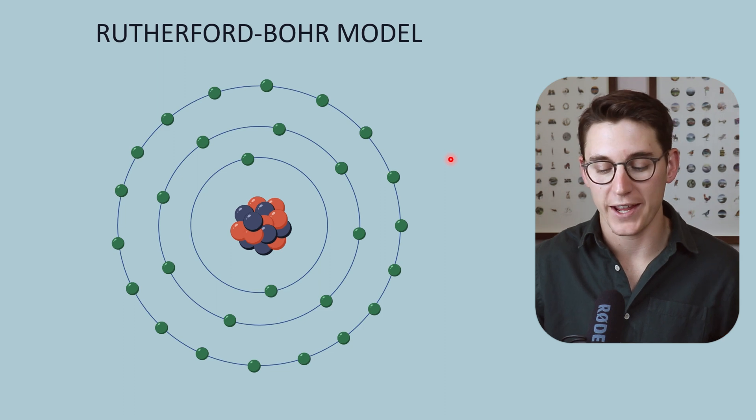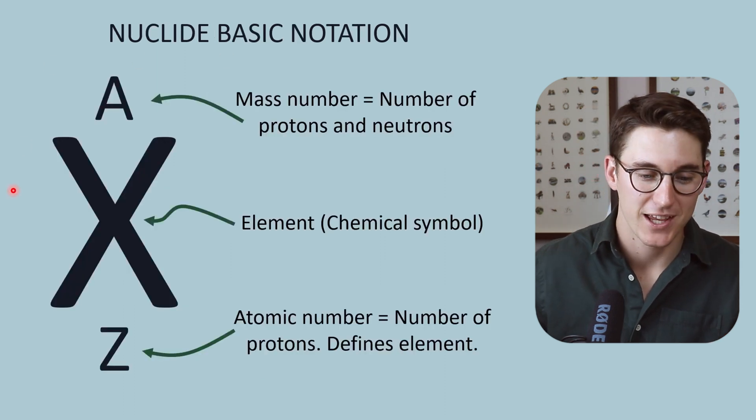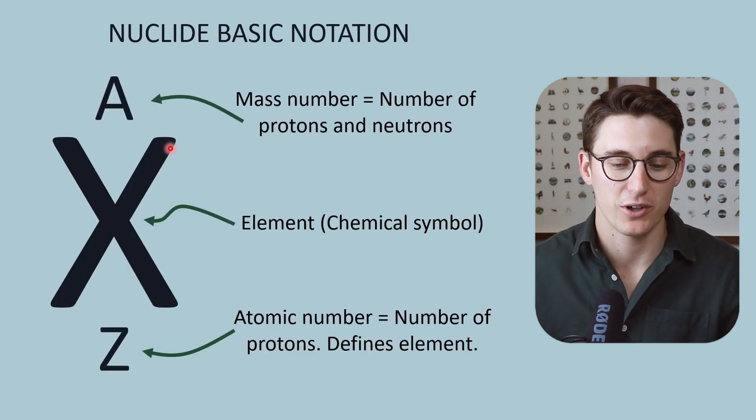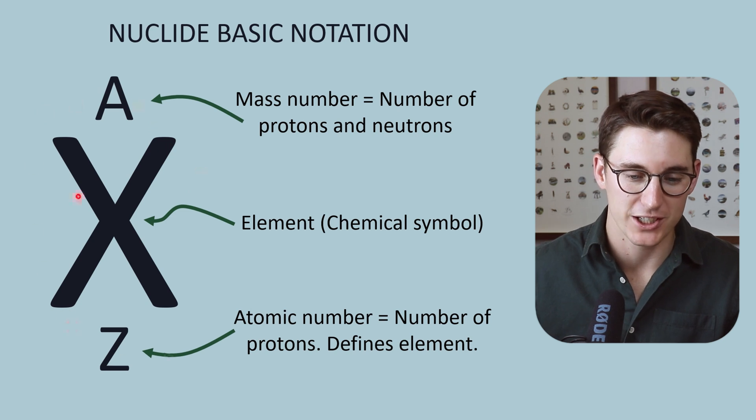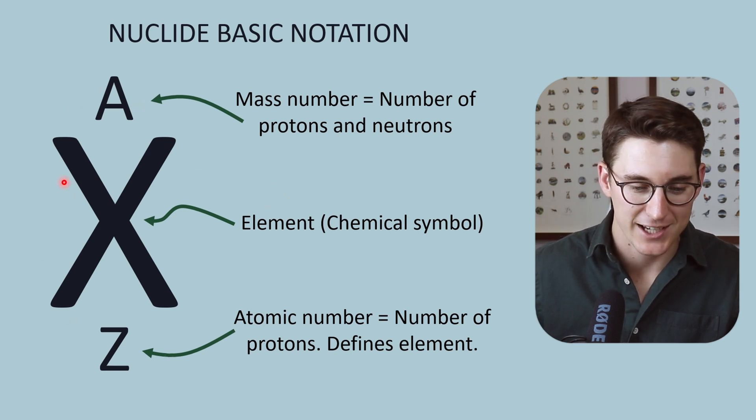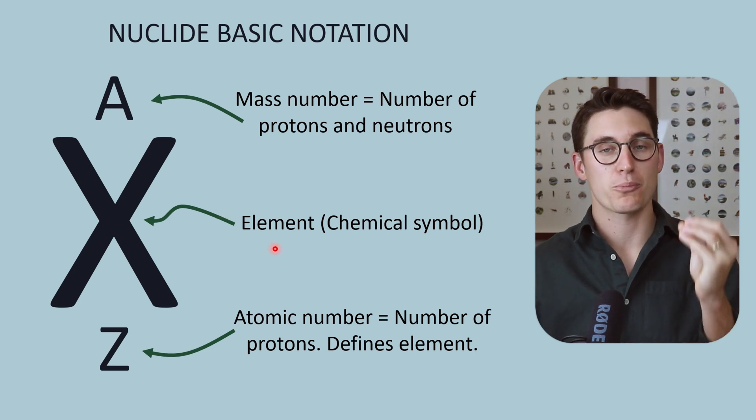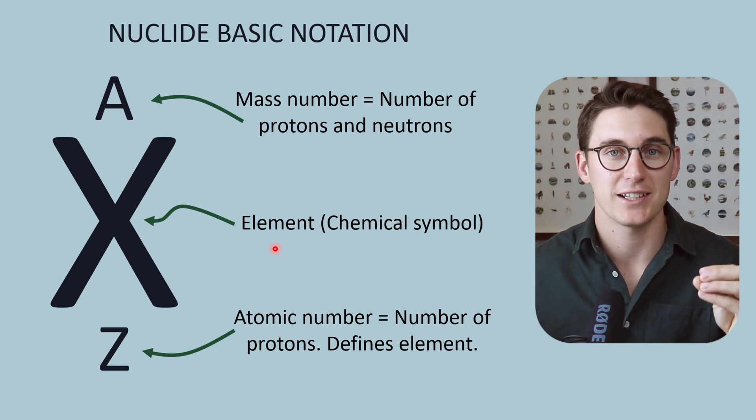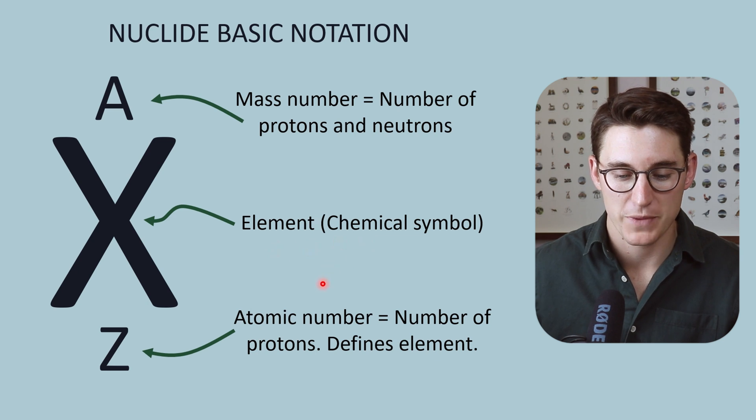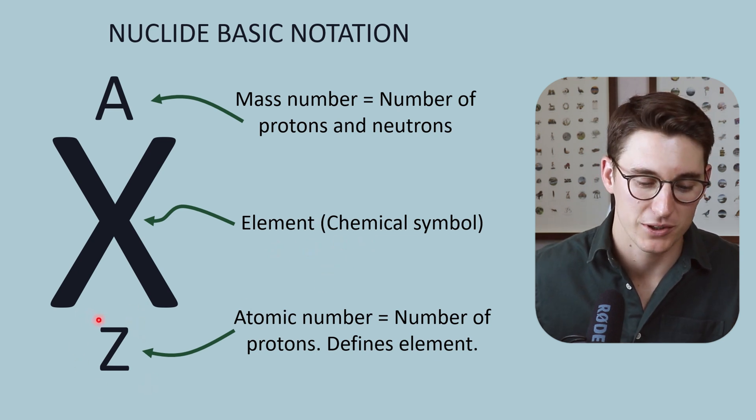We have a standard way of writing specific elements within the periodic table, and we use this basic notation for elements. This X represents the chemical symbol of that element, and as I've said, the number of protons in that element defines the element's chemical symbol. This is what's known as the atomic number of that element.